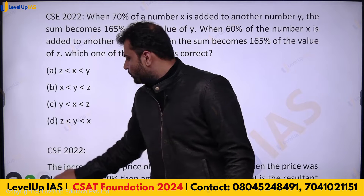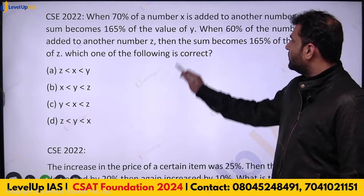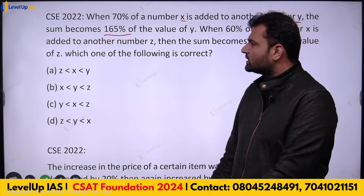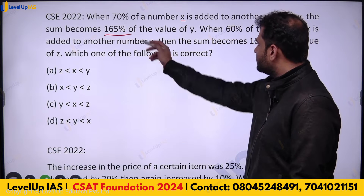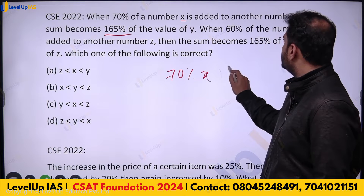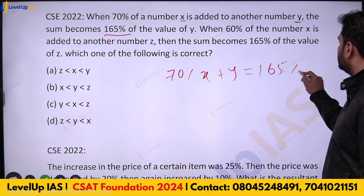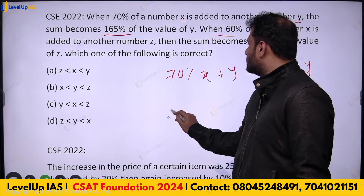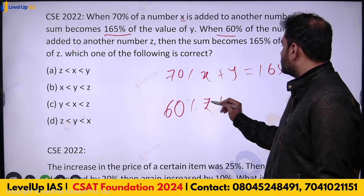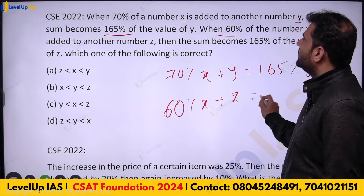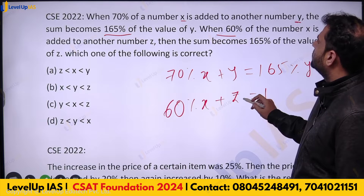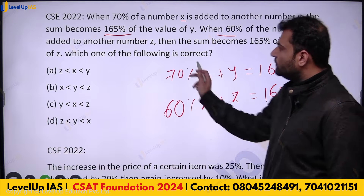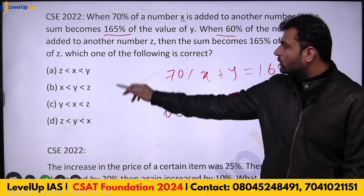The first 2022 question: 70 percent of some number x is added to another number y, and the sum becomes 165 percent of y. We write this as: 70% of x + y = 165% of y. Another condition: 60 percent of x is added to another number z, giving 165 percent of z.